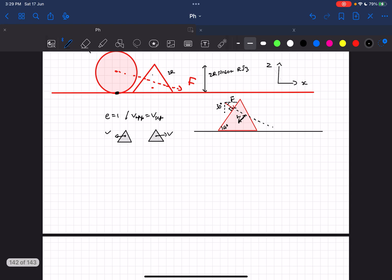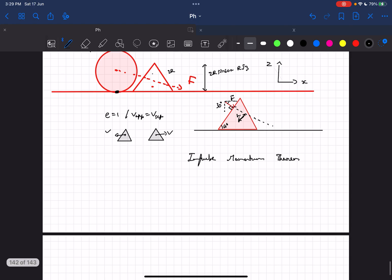Now in order to find the value of force F, we are going to be using the impulse momentum theorem, because the force F is acting for a very short duration delta t on the wedge. Hence the force is impulsive.